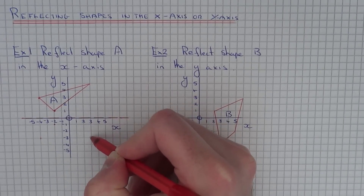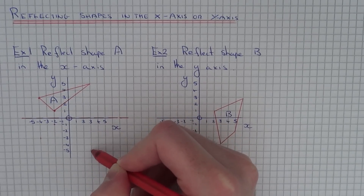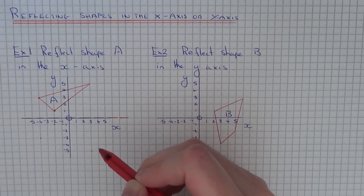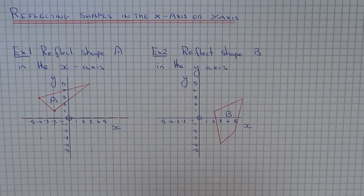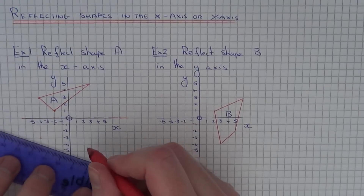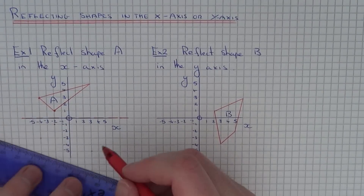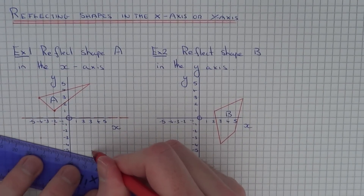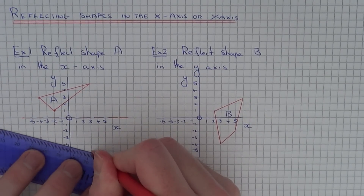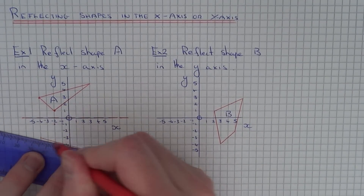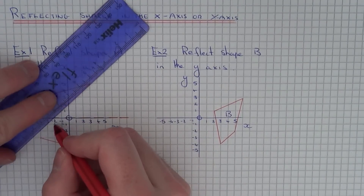One, two, three, four, five. So once you've plotted your new corners, just join those corners up neatly with the ruler.